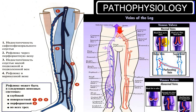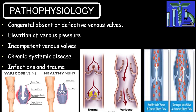If blood is flowing from superficial via perforating vein into deep vein and then towards the heart, that is normal. But because of a non-functioning venous valve, blood flows in reverse direction, giving rise to dilatation of the vein — called varicose vein. Congenital absence or defective valves, elevation of venous pressure, incompetent valves, chronic systemic disease, infection, and trauma can all cause reverse blood flow and varicose vein formation.